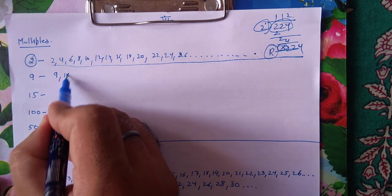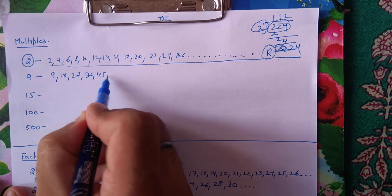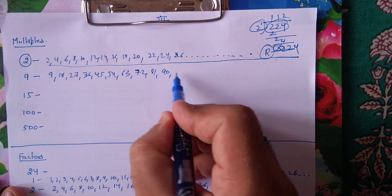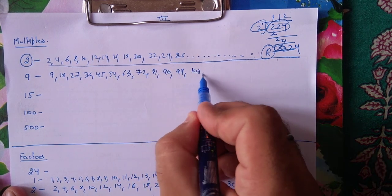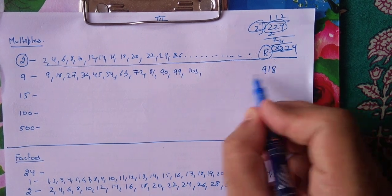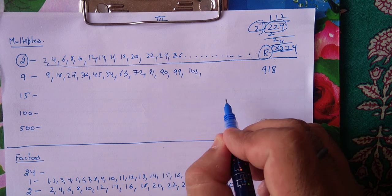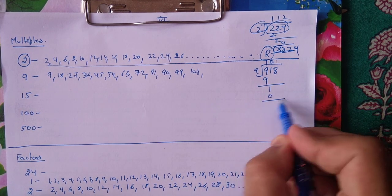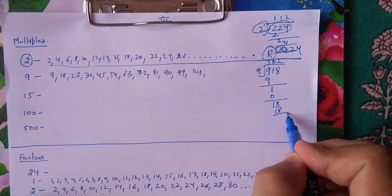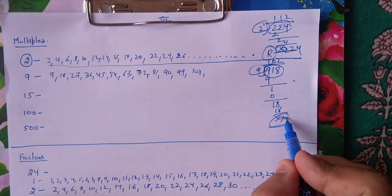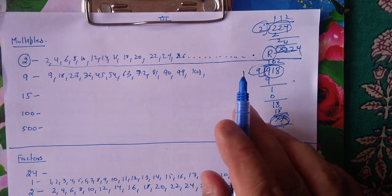एक और example - suppose 9. तो 9 की table: 9, 18, 27, 36, 45, 54, 63, 72, 81, 90, 99, 108 - यह सारे 9 के multiples हुए. कोई बड़ा number आ जाता है जैसे 918, तो कैसे पता चलेगा कि यह 9 का multiple है? इसको हम 9 से divide कर देंगे: remainder 0 आया, तो मतलब 918 9 का multiple है. अगर कहीं भी remainder बचता है, तो वो 9 का multiple नहीं है.